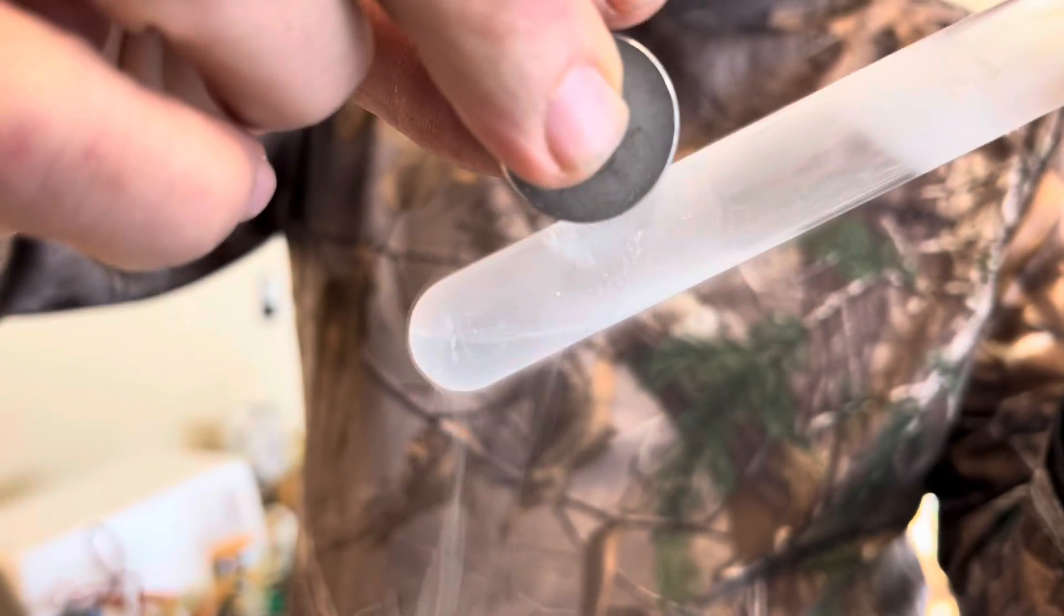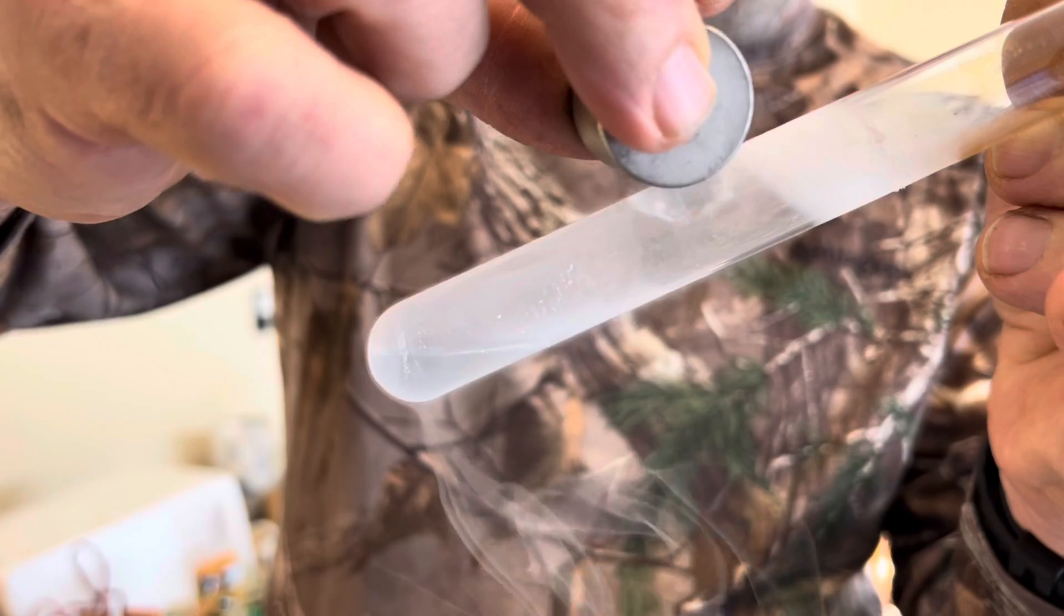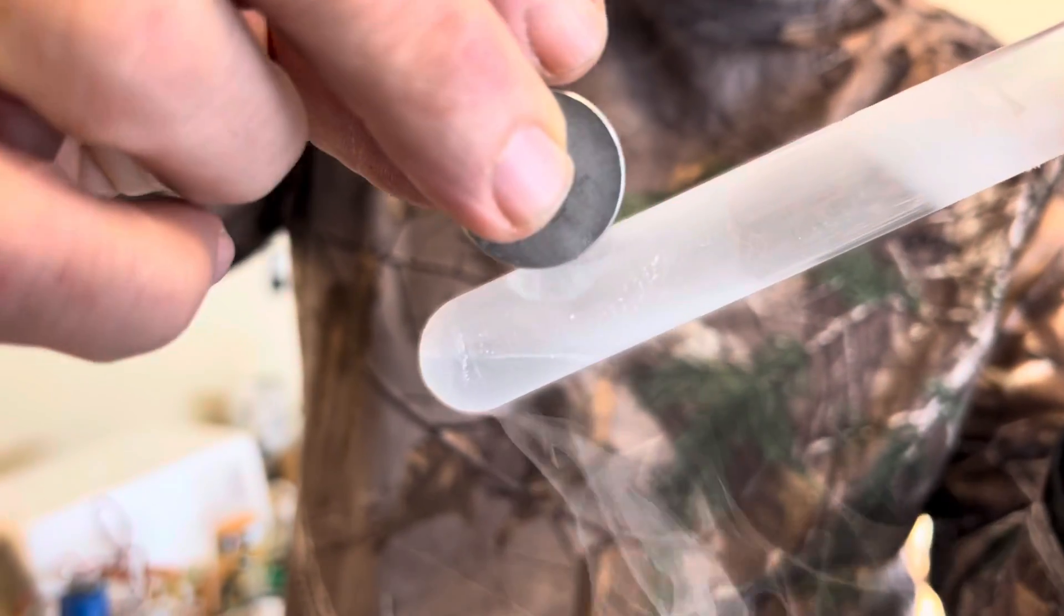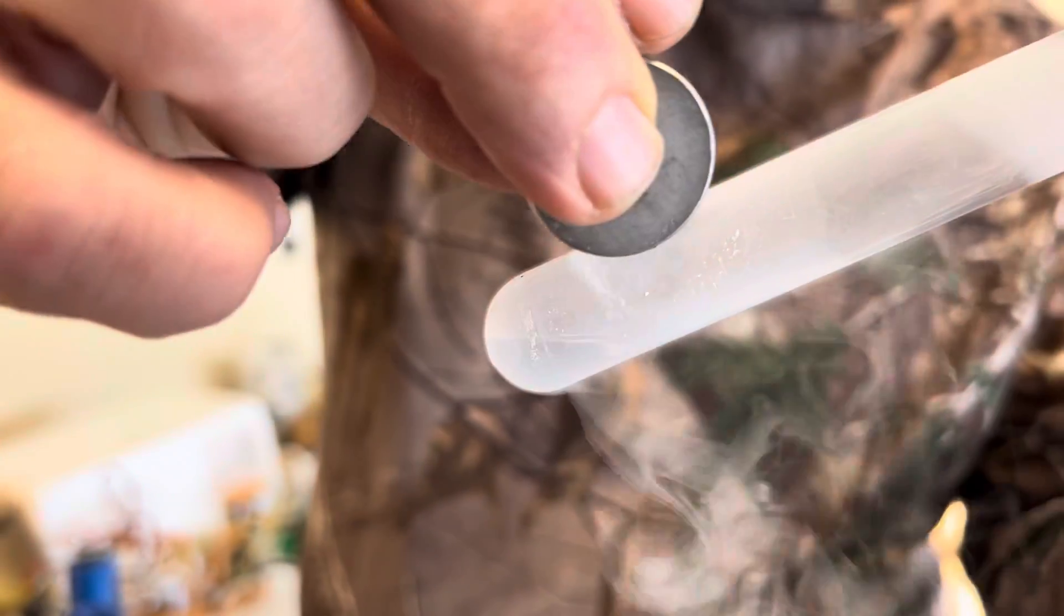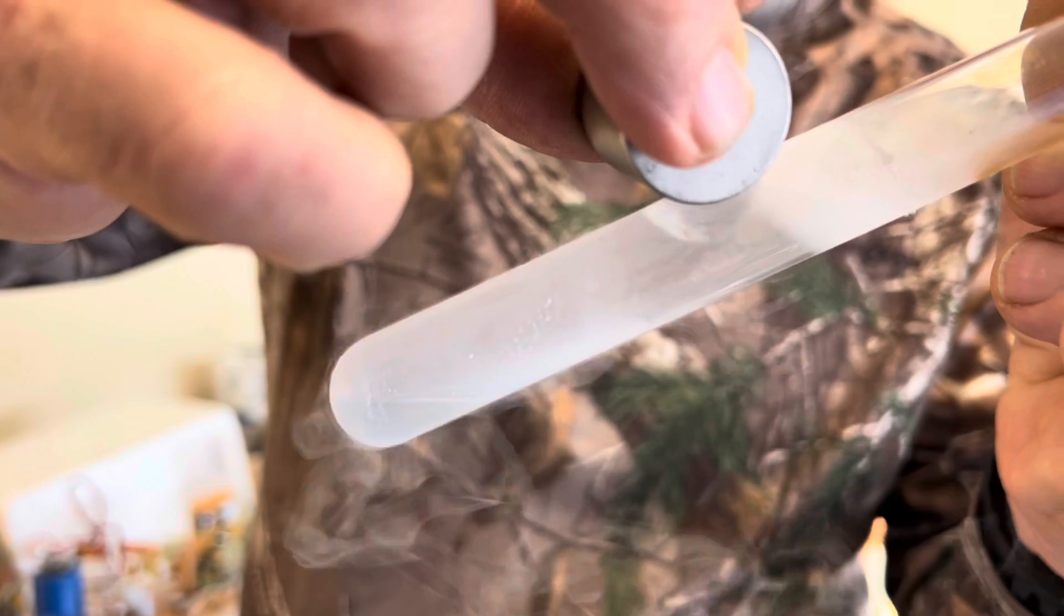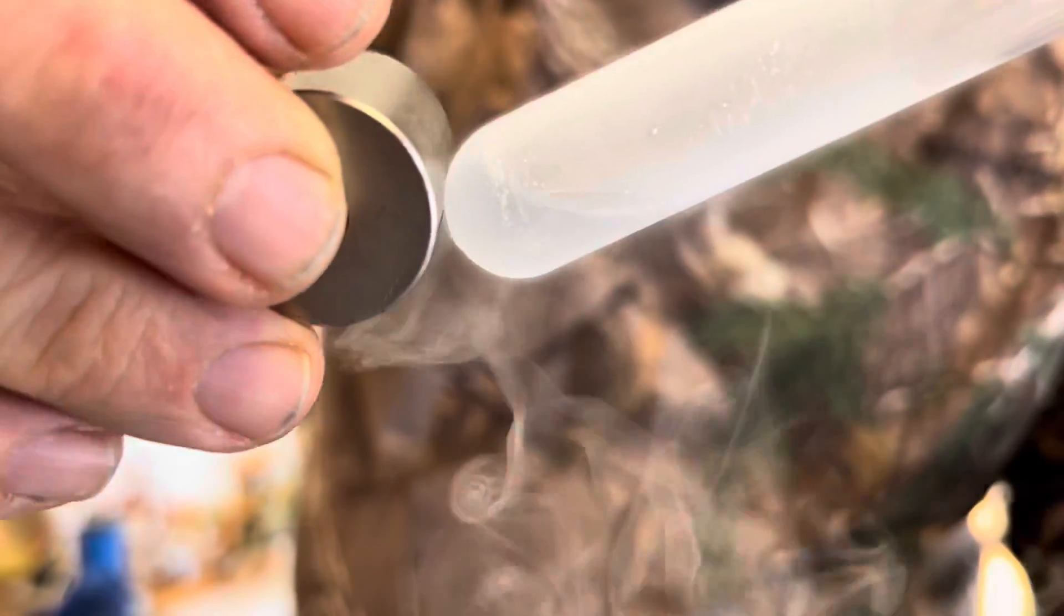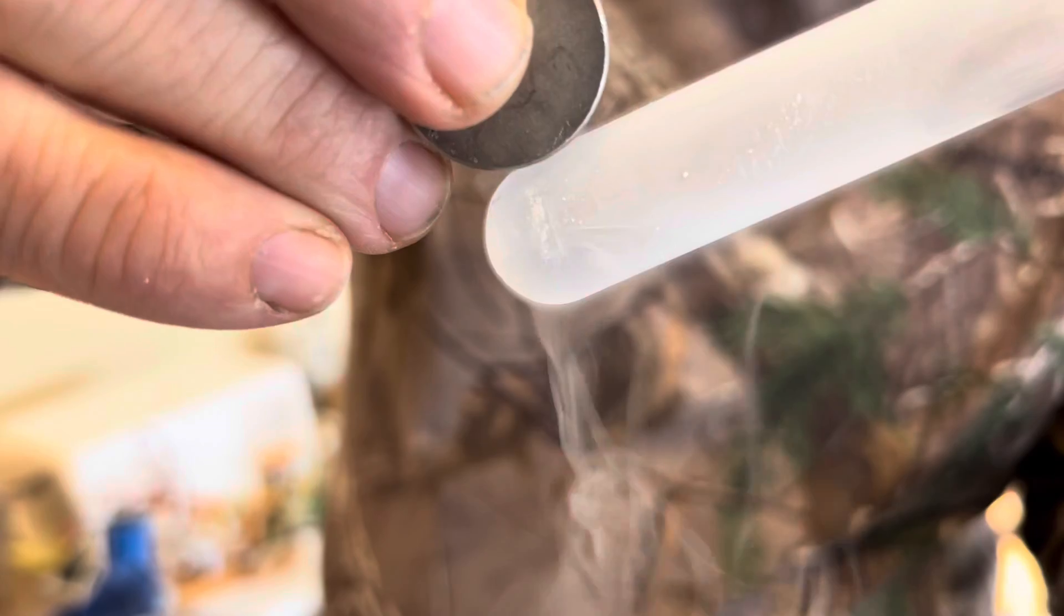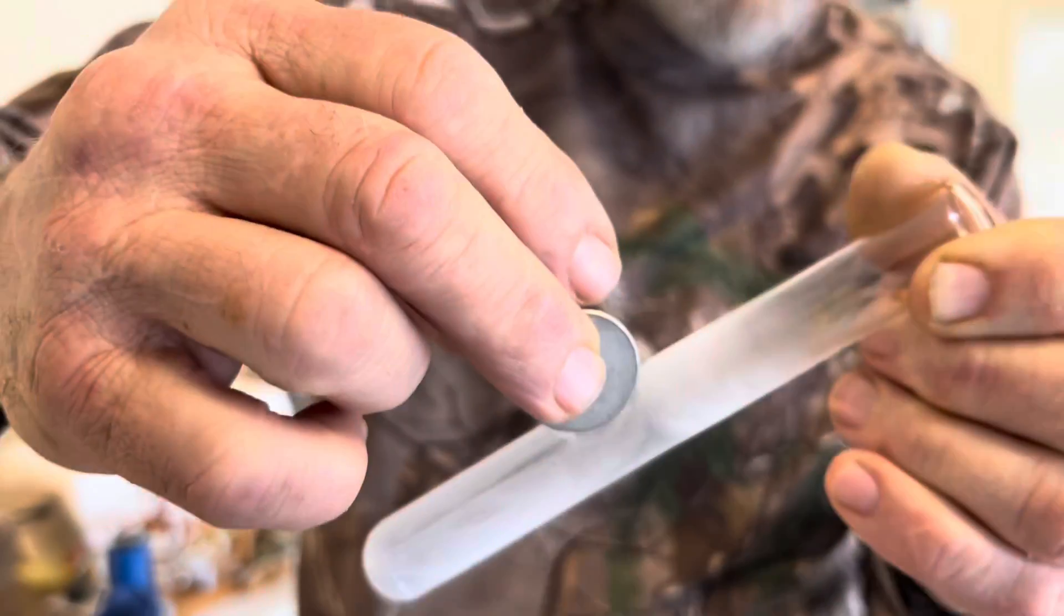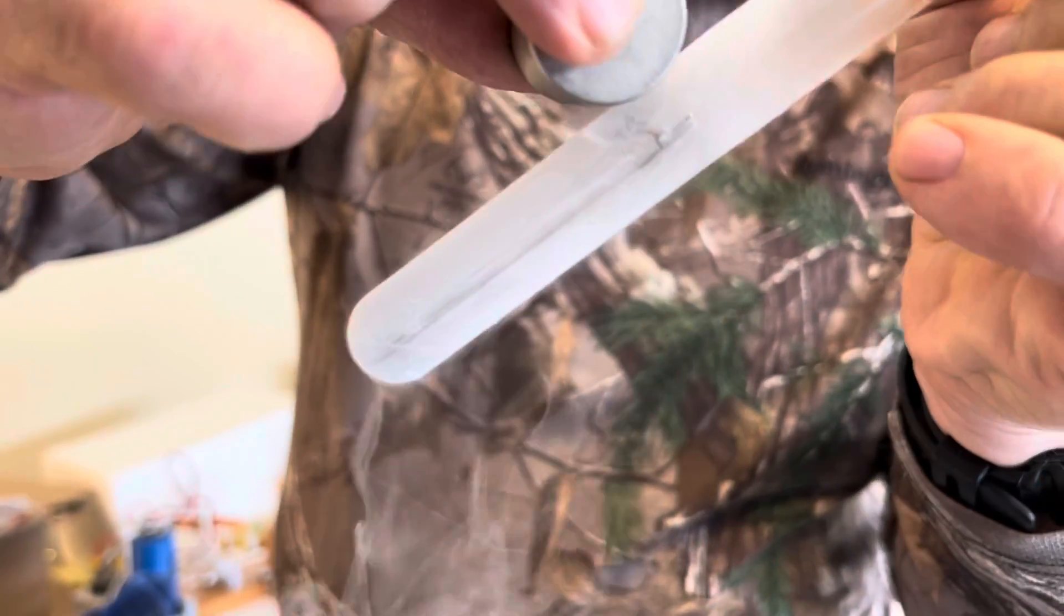Here you can see liquid oxygen sticking to a magnet. This shows that liquid oxygen is paramagnetic and will stick to a very strong magnet. This is something you really only hear about in textbooks, and it's a unique property of oxygen.